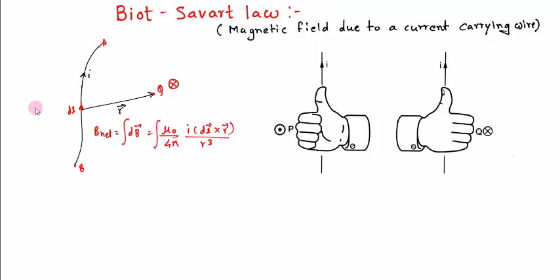And at this point P, if I want to calculate, then the direction at this point P is going to be dL bar cross R bar, which is out of the page. The dot notation represents out of the page. So the direction of the magnetic field at point P is out of the page.